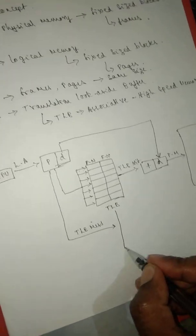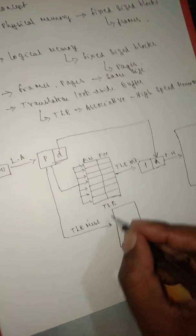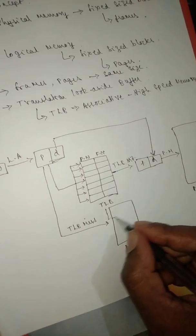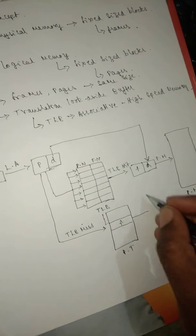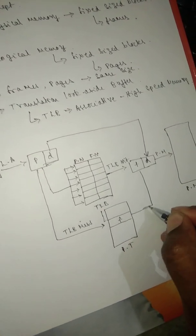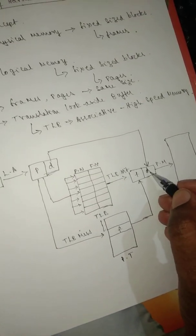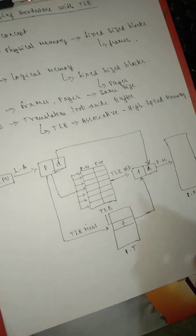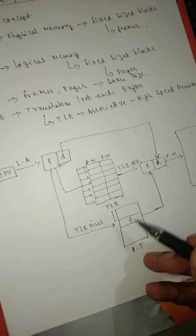Here the page table is accessed using the searching technique. You retrieve the appropriate frame, then update or use that frame and combine it with the offset or displacement to access the physical memory.